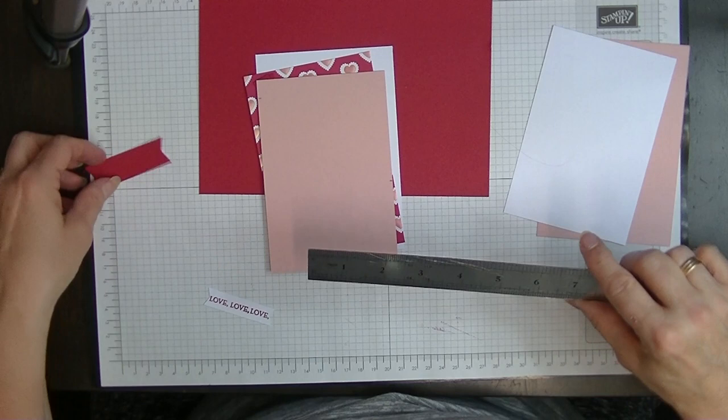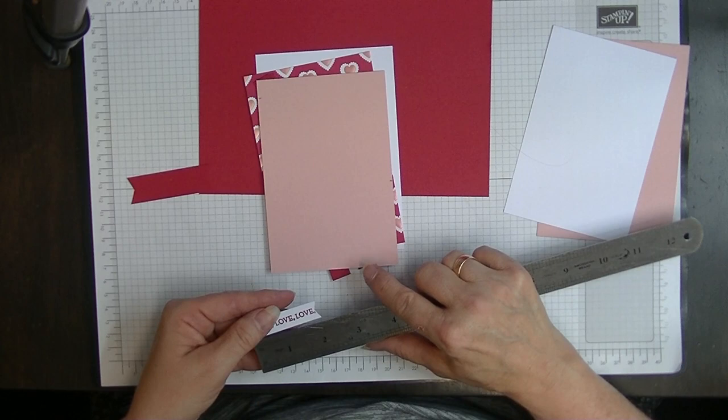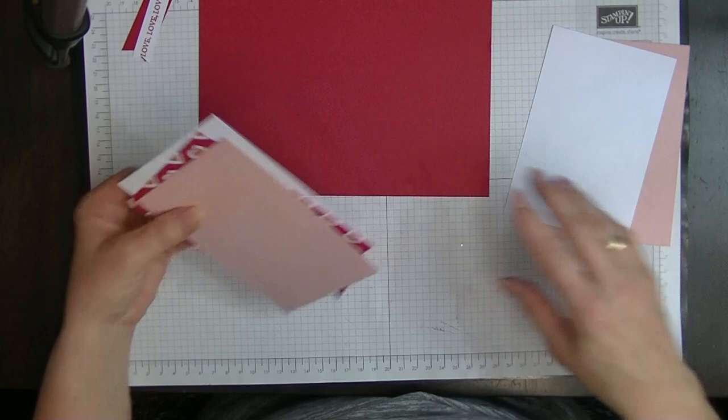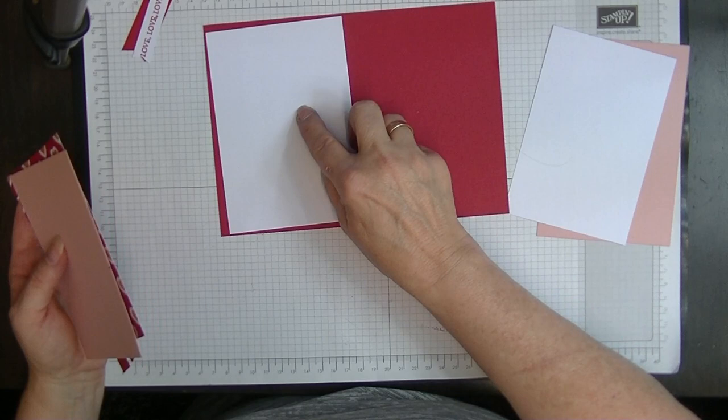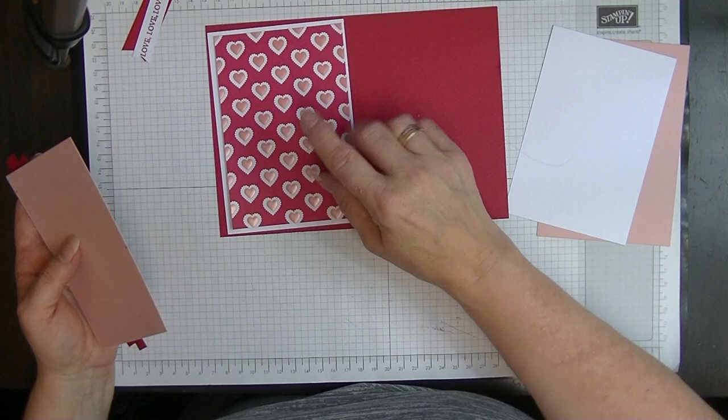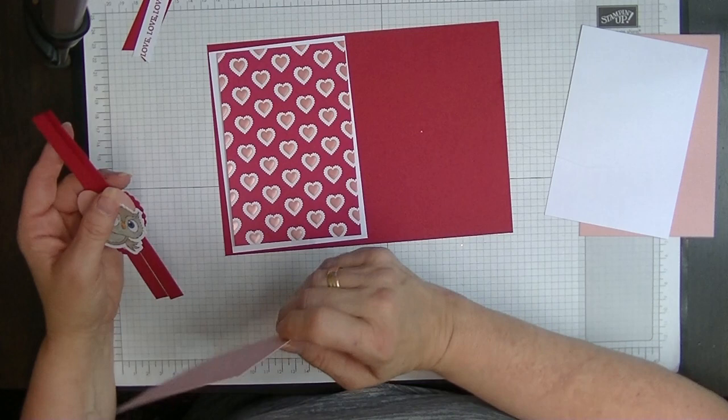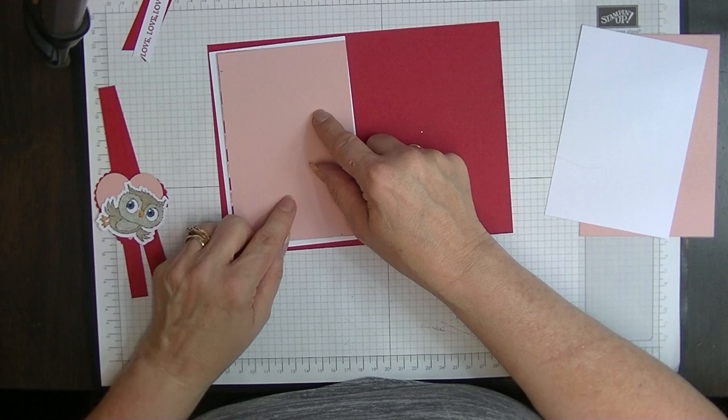This piece measures 2 inches by ½. For the front of my card I have a layer that measures 5⅝ by 3⅞, and then I have a DSP layer that measures 5⅜ by 3⅝. I'm using old DSP I just want to use up. I'm not a big fan of Valentine's.